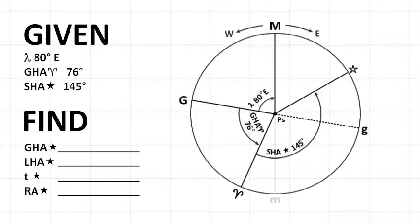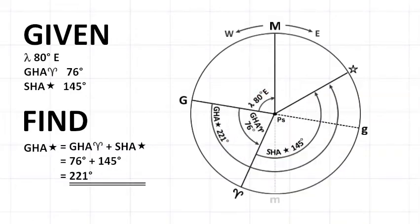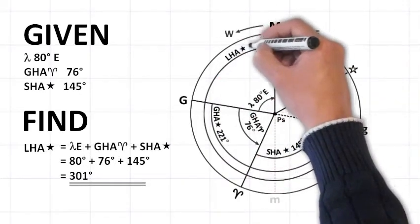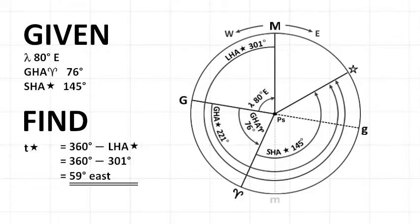The time diagram is now established for our example question and can be used to determine the GHA, LHA, meridian angle, and right ascension of the star. Based on this diagram, GHA of the star equals GHA of Aries plus SHA of the star, which equals 221 degrees. LHA of the star equals the sum of east longitude, GHA of Aries, and SHA of the star, which equals 301 degrees. The shortest angular distance from the local celestial meridian to the star is easterly.